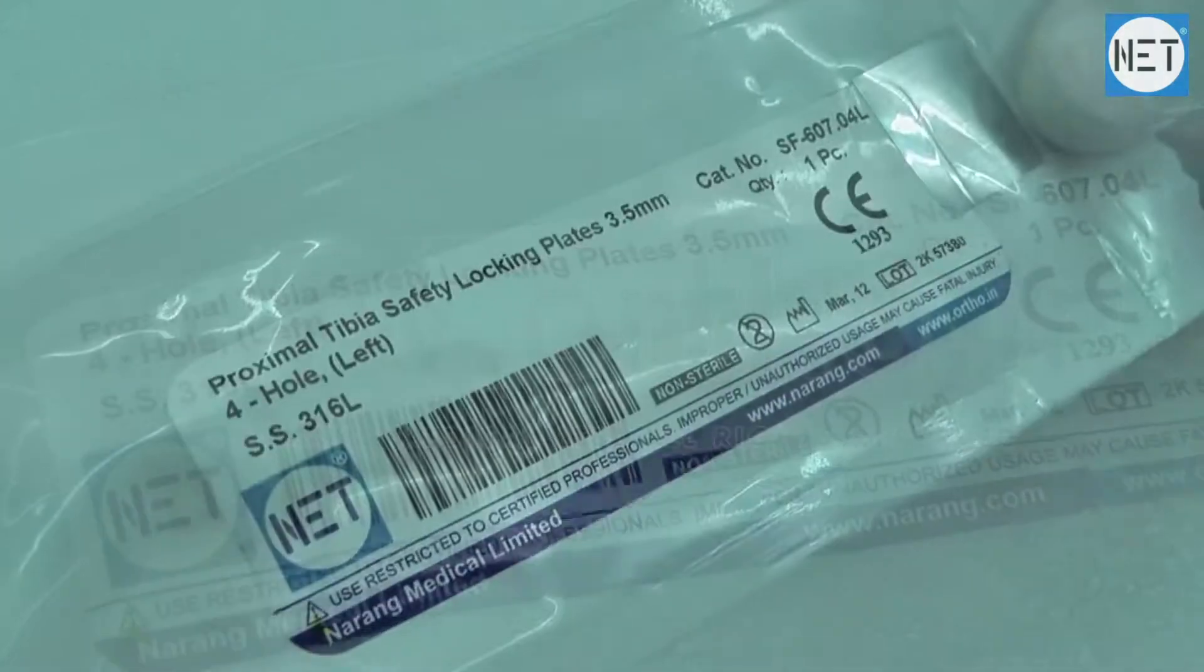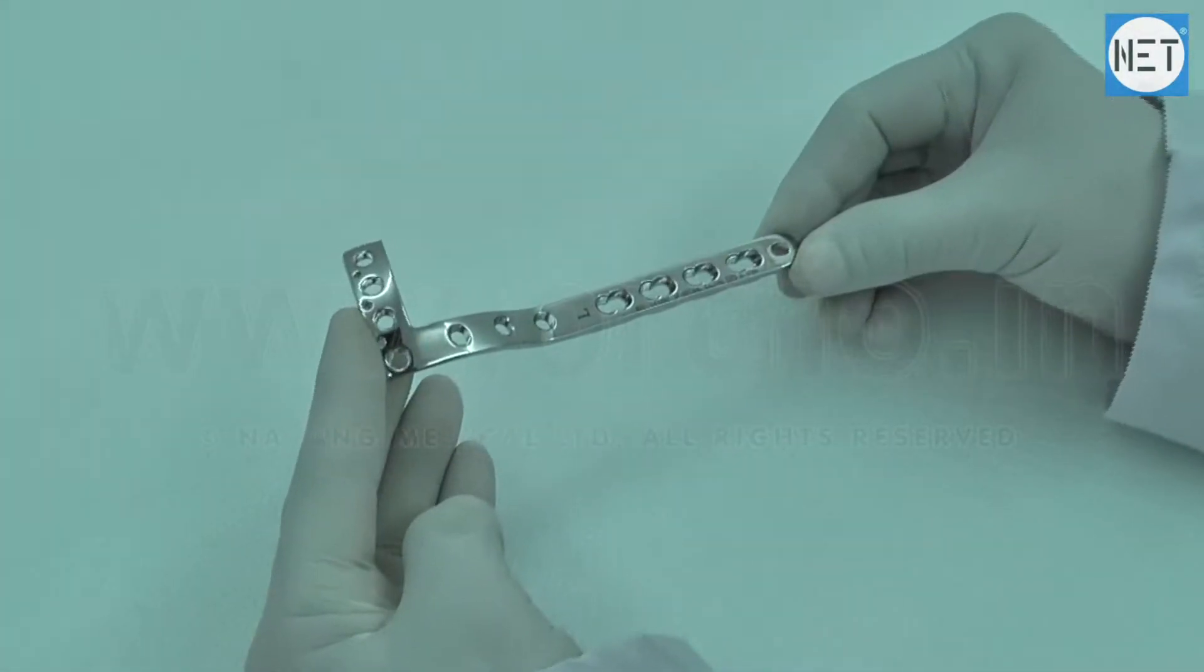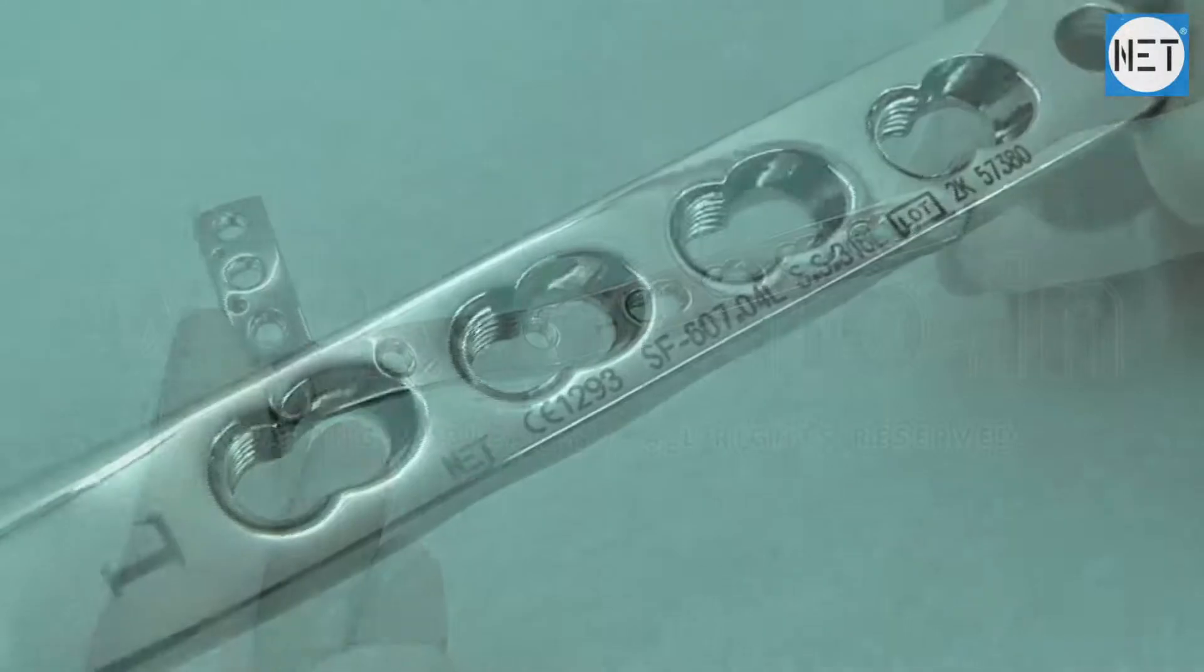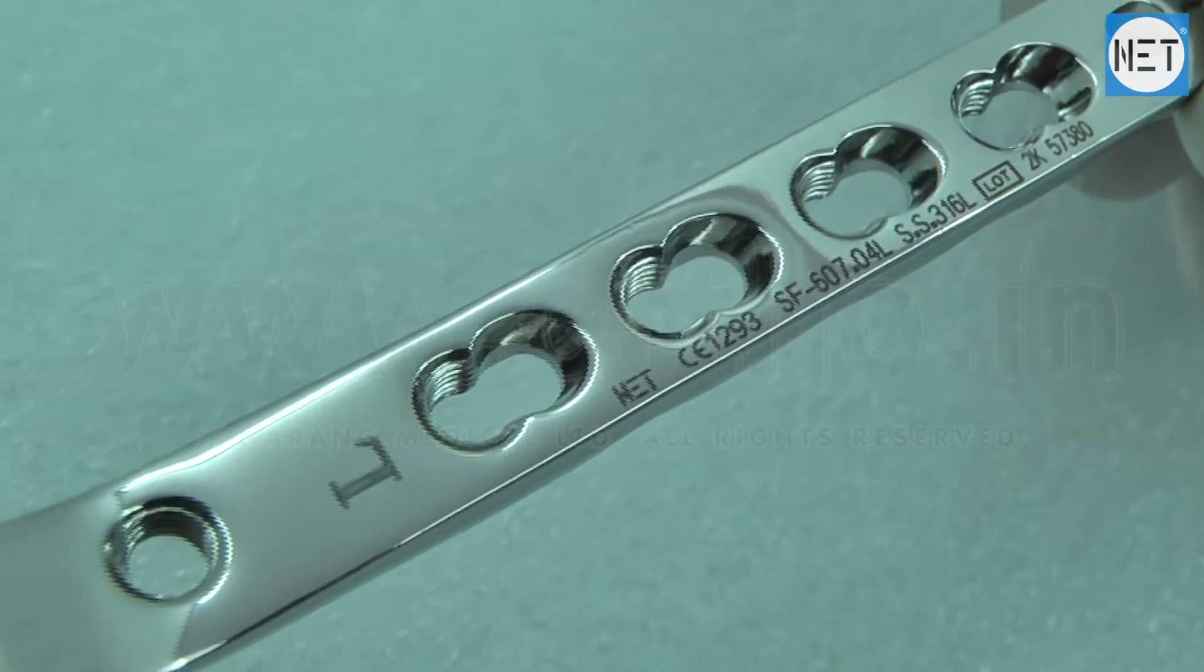Net Brand Proximal Tibia Safety Lock Plate 3.5 mm. These plates are used for non-unions, mal-unions and fractures of proximal tibia including simple,